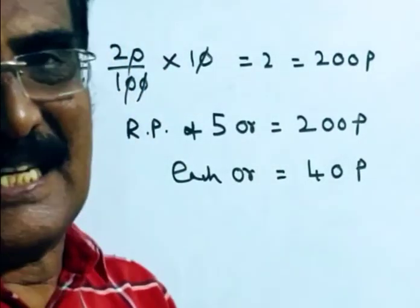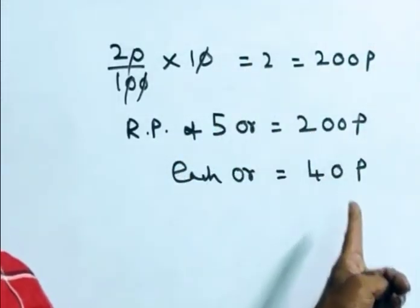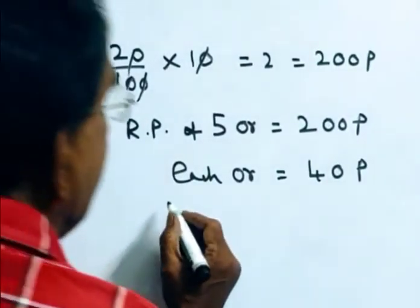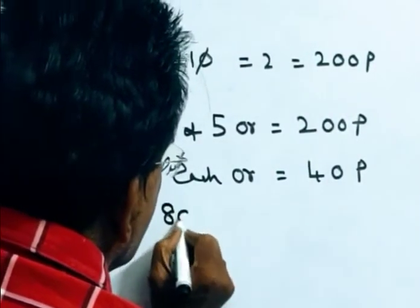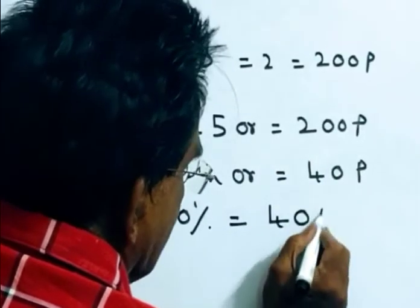Here the reduction is 20%. So, this 40 pies is 80% of the original price. 80% of the original price is 40 pies.